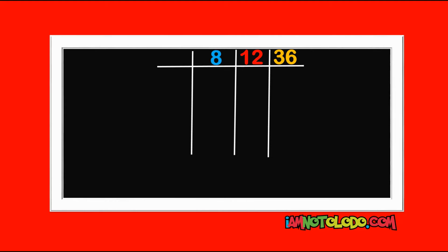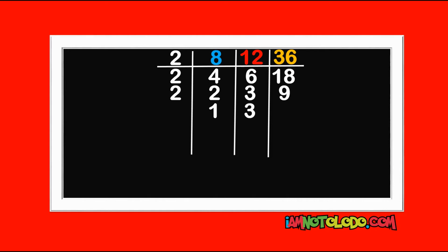We start with 2. 2 in 8 is 4, 2 in 12 is 6, 2 in 36 is 18. 2 can still divide these. 2 in 4 is 2, 2 in 6 is 3, 2 in 18 is 9. 2 in 2 is 1. 2 cannot divide 3, so we write down our 3. 2 cannot divide 9, so we write down our 9. Now 2 cannot divide these numbers, so the next number we use is 3.